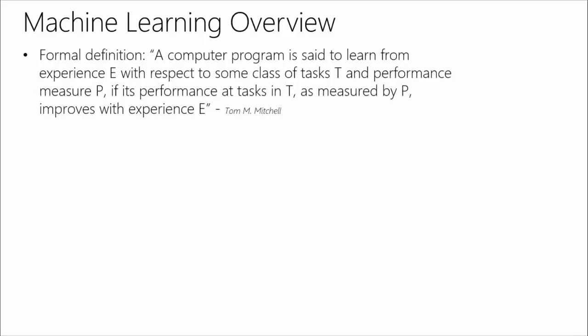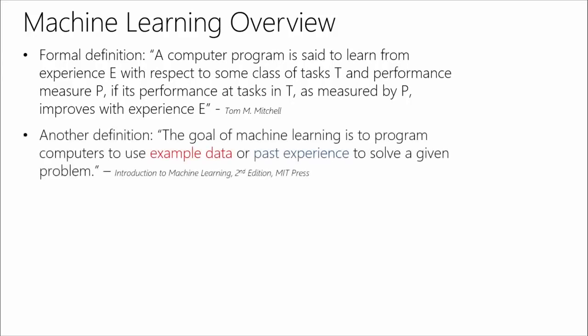The formal definition from Tom Mitchell is: 'A computer program is said to learn from experience E with respect to some class of task T and performance measure P, if its performance at tasks in T, as measured by P, improves with experience E.' That's completely accurate but difficult to understand. A simpler version from MIT Press's Introduction to Machine Learning: 'The goal of machine learning is to program computers to use example data or past experience to solve a given problem.' The two highlighted terms — example data and past experience — represent the two main techniques.